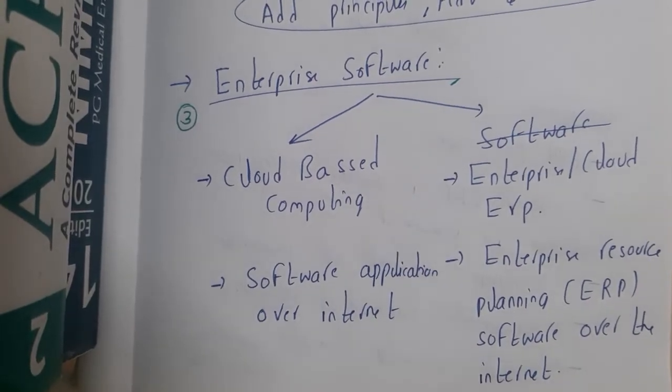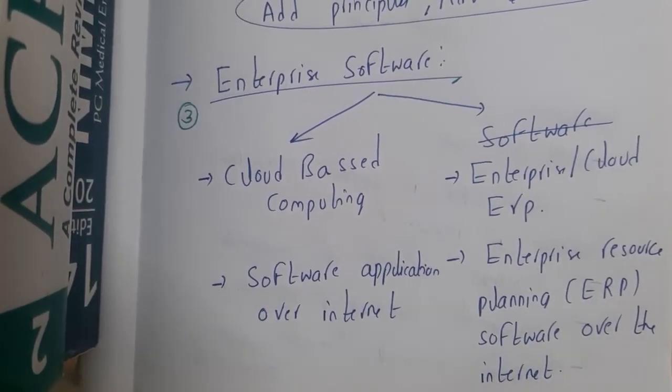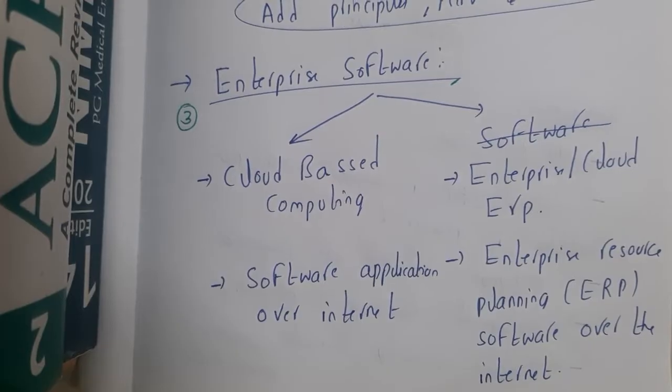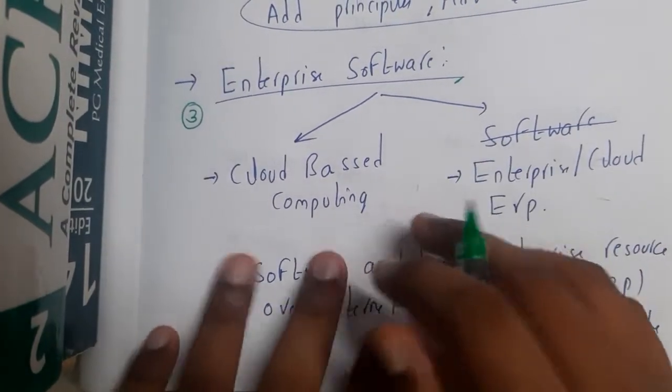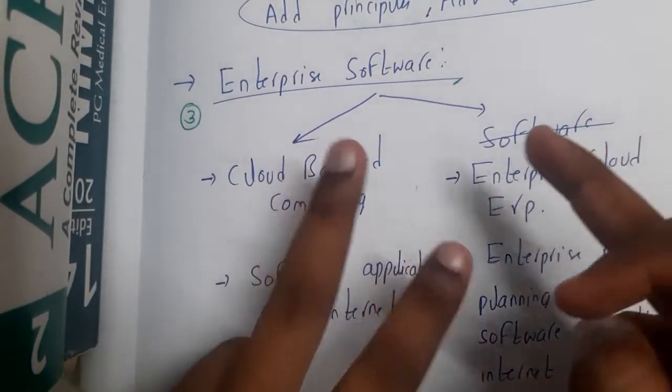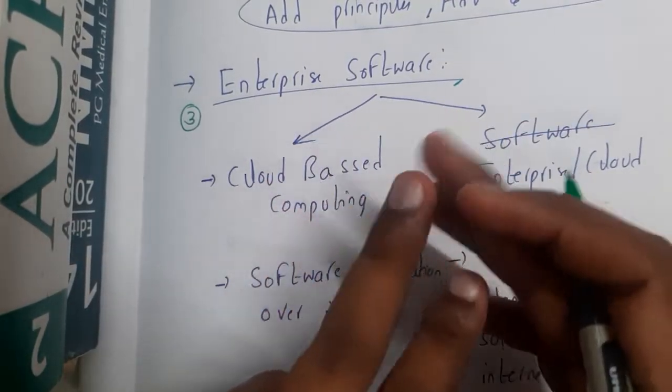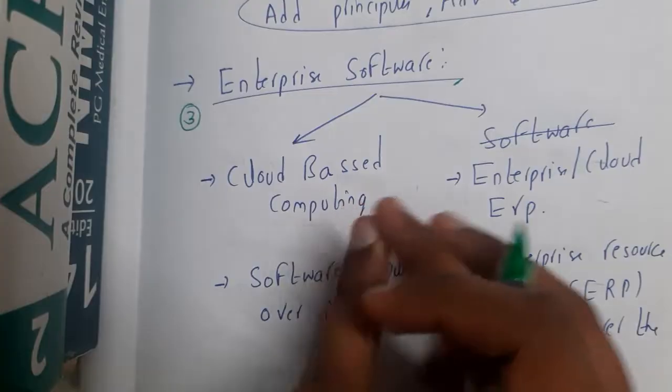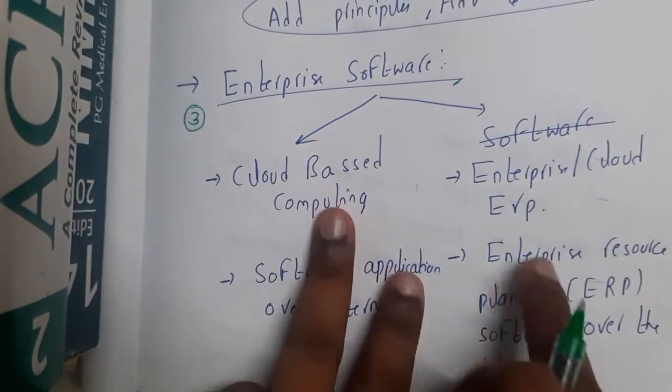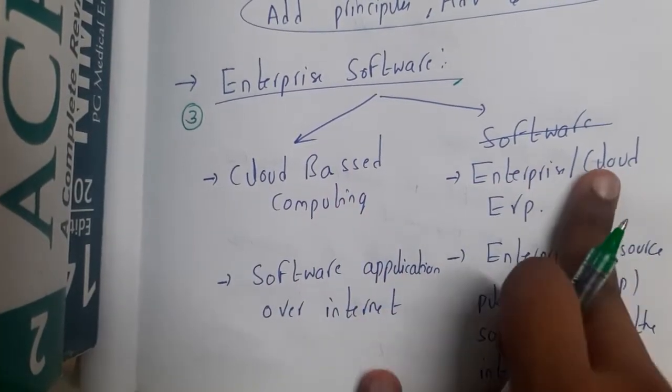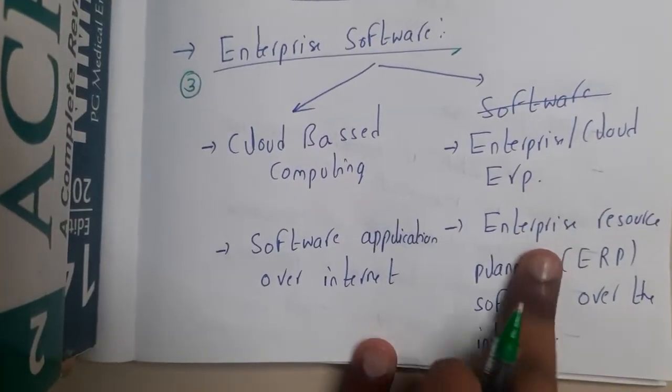Hello guys, we are back with our next lecture. In this lecture, let us go through the concept of enterprise software. Enterprise software is of two types. We have cloud-based computing, which we discussed till now - infrastructure, platform as a service, and software as a service. The other type is enterprise or cloud ERP. ERP is enterprise resource planning.